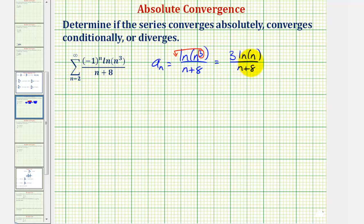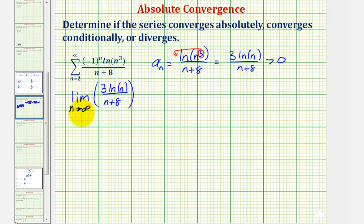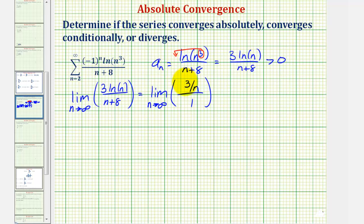Starting at n equals two, all these terms are positive. Now we'll determine the limit as n approaches infinity of a sub n, which is three natural log n divided by the quantity n plus eight. This is an indeterminate form — infinity over infinity — so we'll apply L'Hôpital's rule. The derivative of three natural log n is three over n, and the derivative of n plus eight is one. Since three over n approaches zero as n approaches infinity, this limit equals zero.